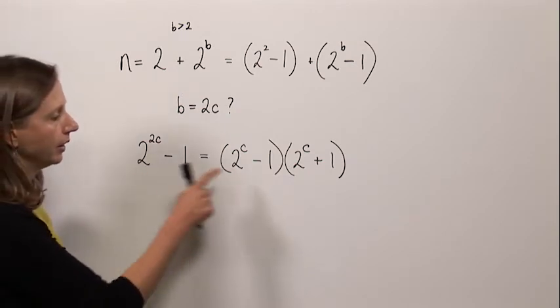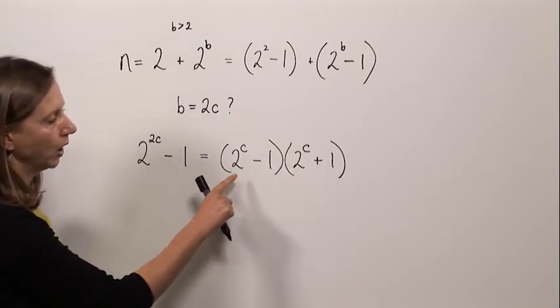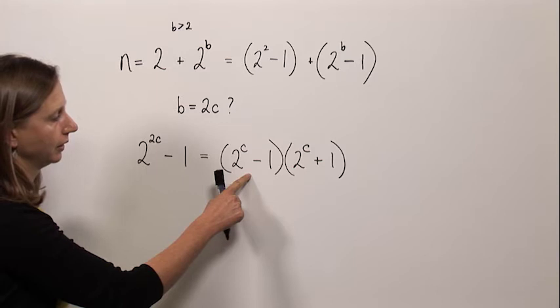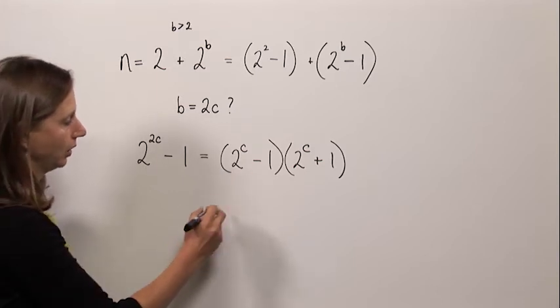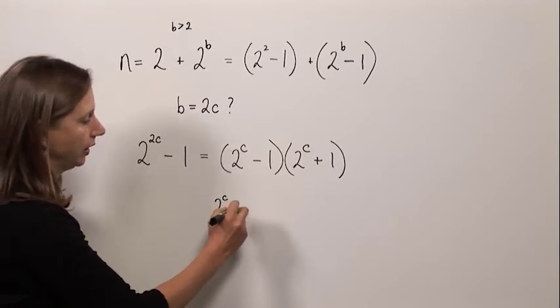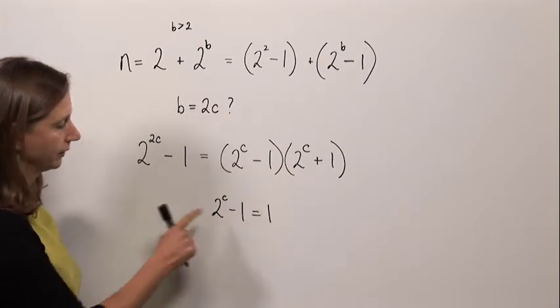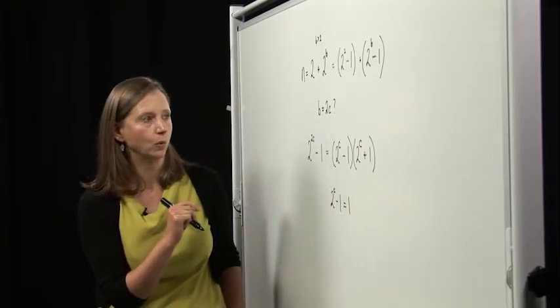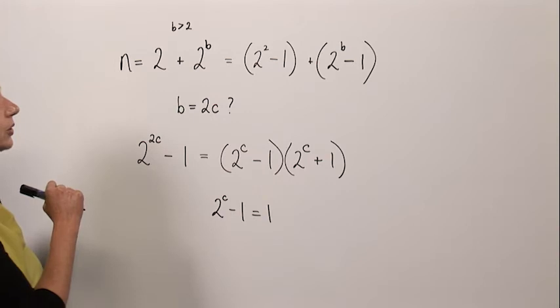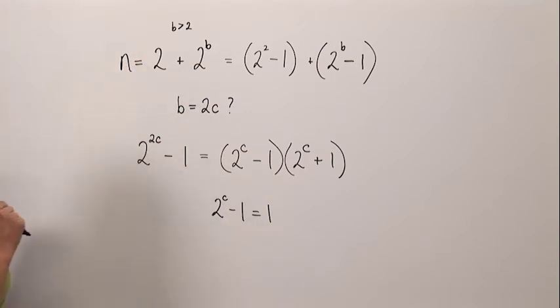But this has to be a prime. And if this was a prime, then one of these would have to be equal to one. It would have to be this one. And if this was equal to one, we would have two to the c minus one equals one. c would have to be equal to one, and that would mean that b is equal to two, which we know can't be true. So b cannot be even.